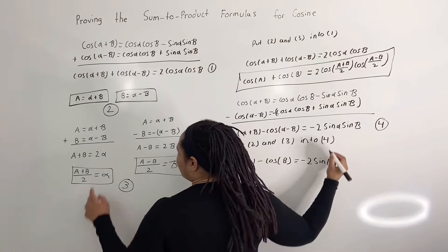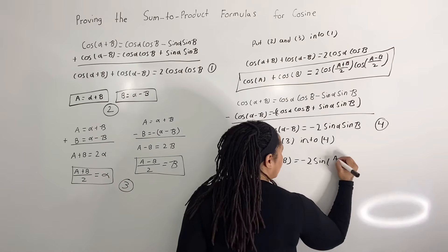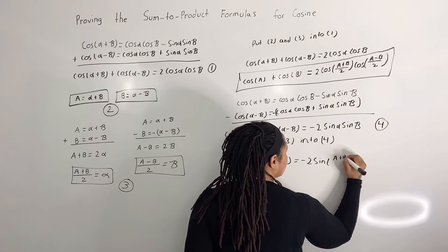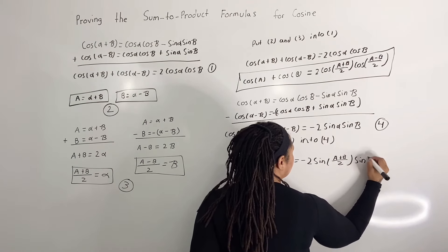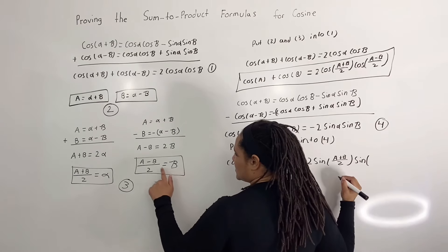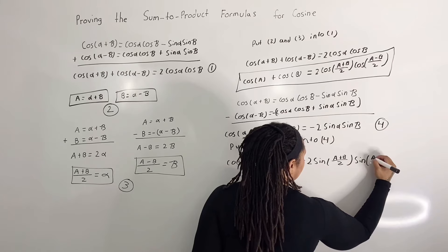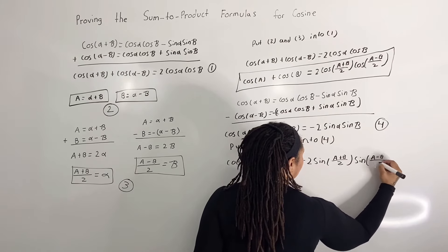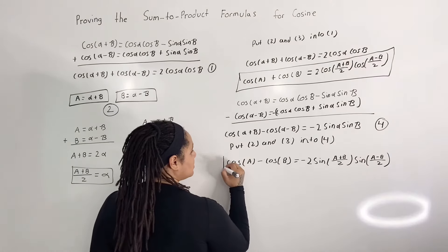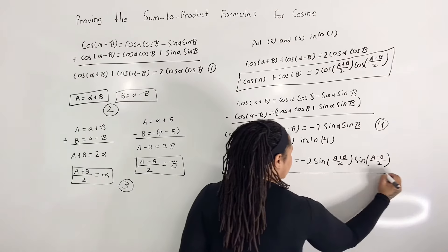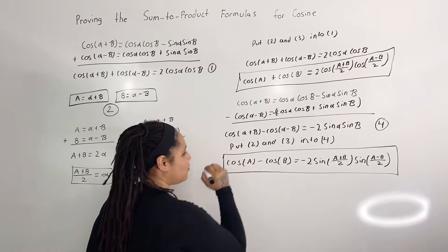...alpha, which is a plus b over 2, so we have a plus b over 2, times sine of beta, which is a minus b over 2, so we have a minus b over 2. And here is our second sum-to-product formula for cosine.